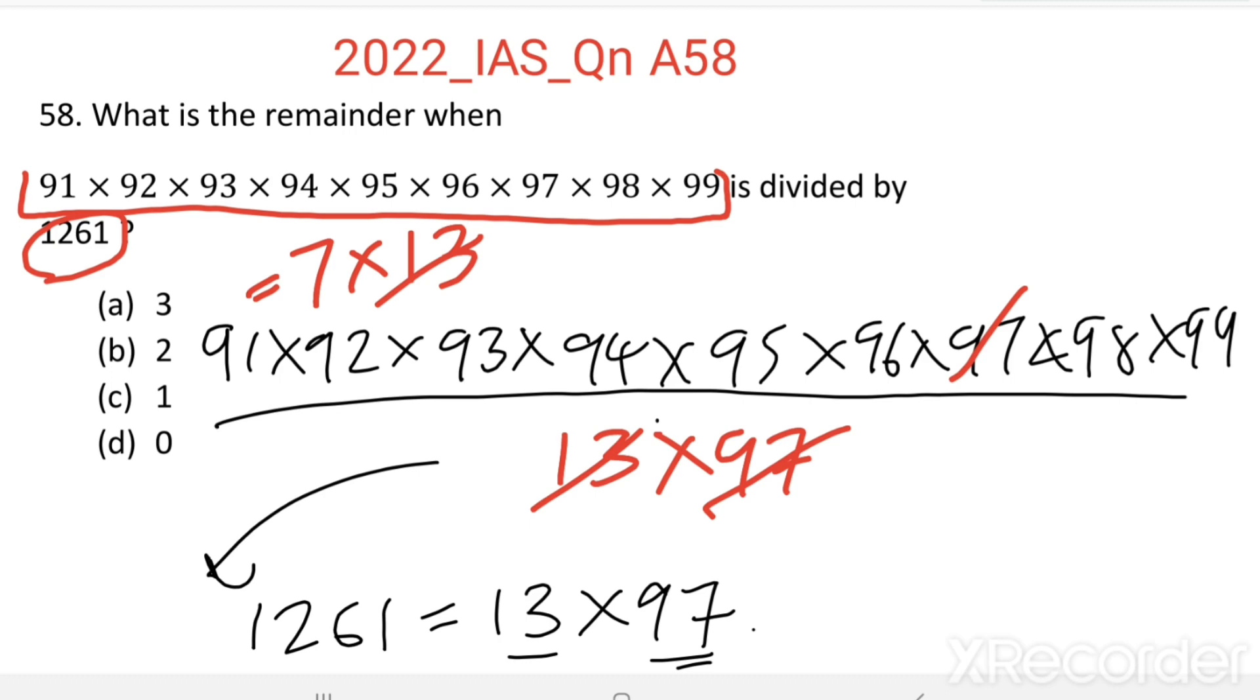That means this product is exactly divisible by 1261. The remainder is 0. Option D is the right answer.